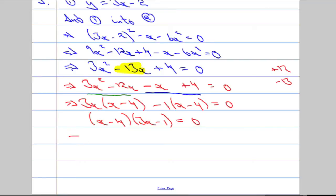So what can I factor out of both of these expressions? I can factor out an x minus 4. And that's going to leave me with 3x minus 1. So we factorise that nicely. That's equal to 0, which means that x is equal to 4. Or, solving this one, 3x minus 1 is going to equal 0, which means that x will equal 1 over 3.